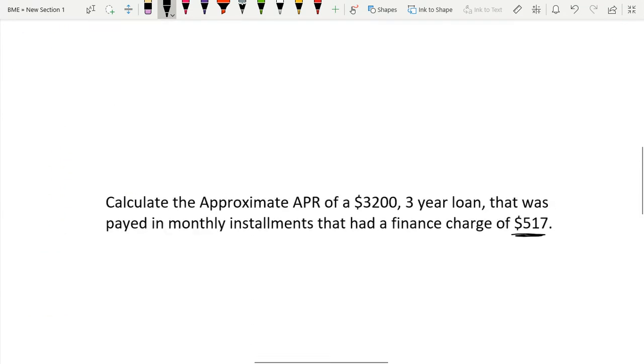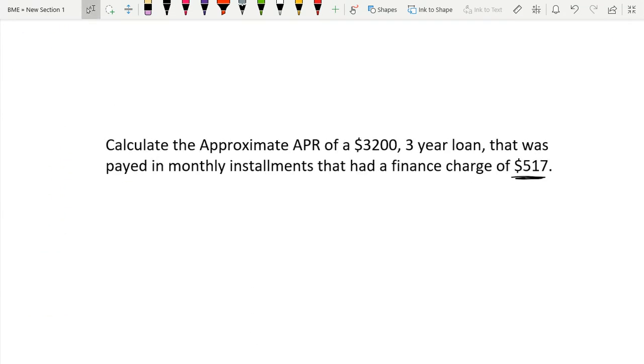Calculate the approximate APR of a $3,200 three-year loan that was paid in monthly installments with a finance charge of $517. A three-year loan paid in monthly installments would be 3 years times 12 months per year, equals 36 months to pay this loan back.